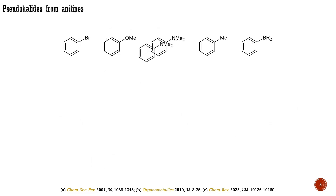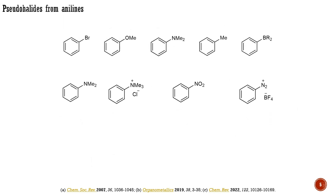For aniline derivatives, conjugation can be discontinued through the preparation of ammonium salts, nitro compounds, and diazonium compounds. Diazonium compounds stand out as superior electrophilic coupling partners for cross-coupling chemistry. As you may recall, they were first applied by Meerwein, and metal-catalyzed transformations involving diazonium compounds are frequently referred to as Meerwein cross-coupling reactions.